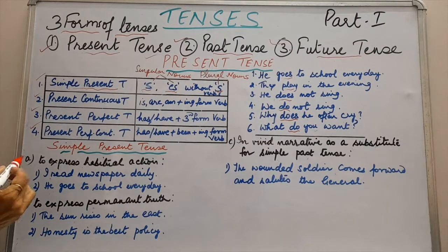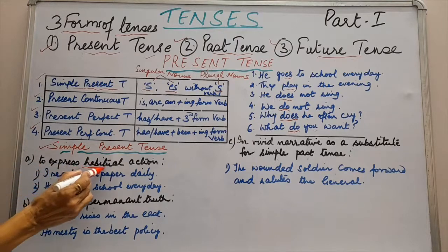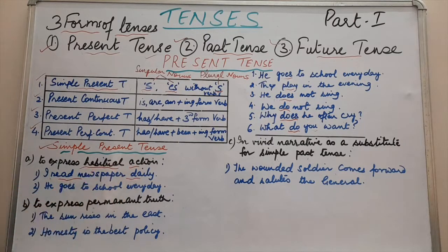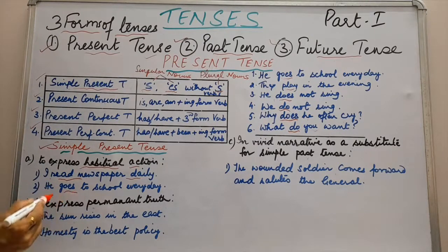Let us understand the situations in which we use simple present tense. First, it is used to express habitual action. Example: I read newspaper daily — this is my daily habit, I read newspaper every day. He goes to school — going to school is also a routine for him, this is also a habit. So we have used simple present tense.